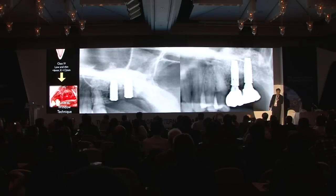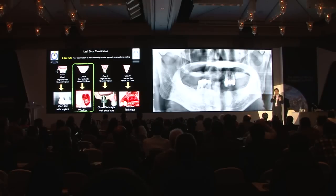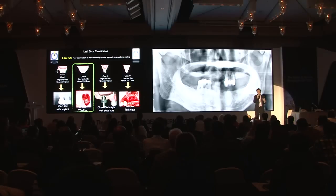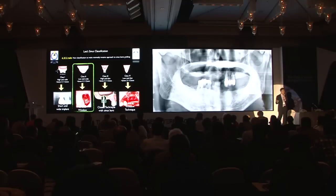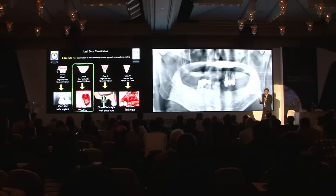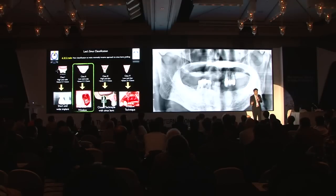The patient came back one year later and received the implant crown. The last sinus case I would like to share is another class 2 case. In this scenario, you would think a lateral window is needed because it is severely pneumatized and most recommend lateral window when you have less than 5 mm bone height. But the most important aspect is the width of the alveolar bone.